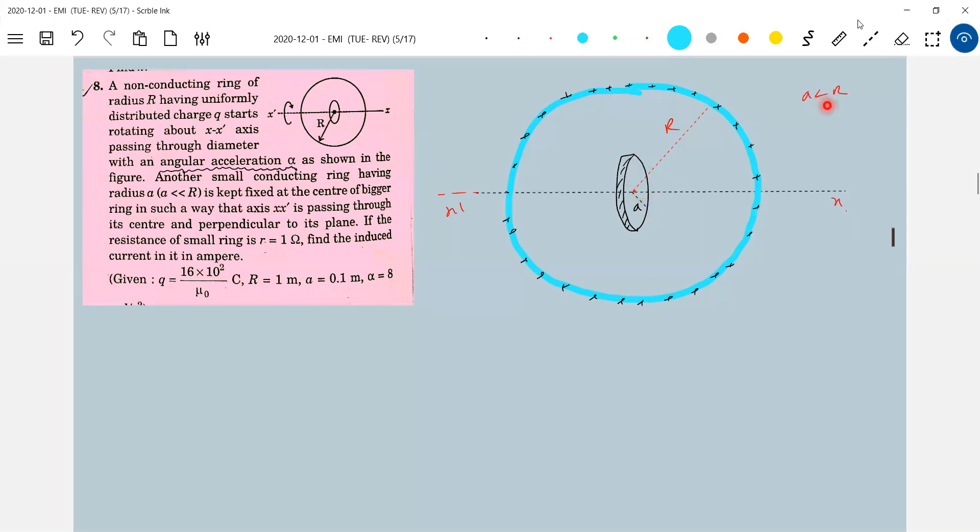There'll be the field everywhere here because A is very much less than R. So we have to calculate the field. This rotating ring, how will it be? It will be like a thin ring now. So you assume a strip now.